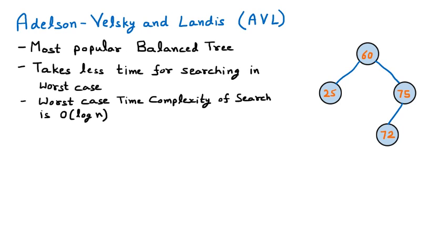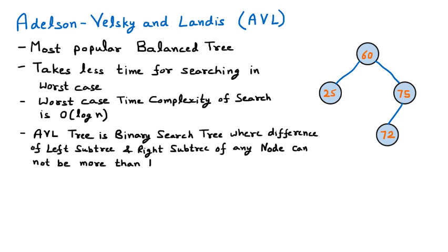By definition, an AVL tree is a binary search tree where the difference between the height of the left subtree and right subtree of any node cannot be more than one. So the AVL tree is an extension of binary search tree — whatever tree we take must be a binary search tree — but with one additional feature: the height difference between the left subtree and the right subtree must be at most 1 for any node.